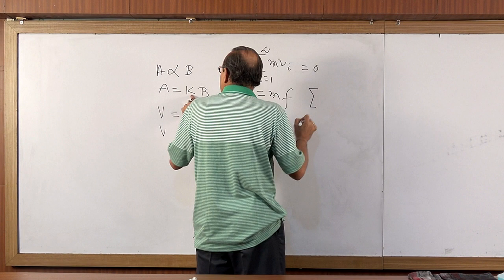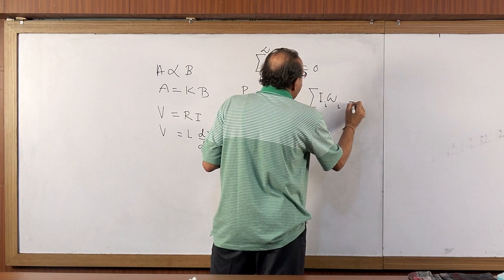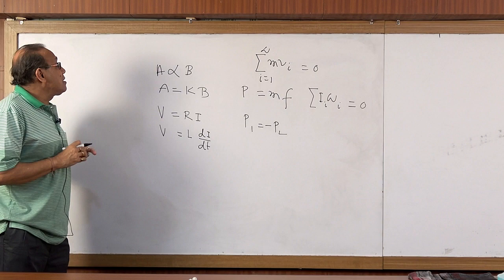Again, we want to put A equal to I omega_i, and K equal to 0. This is the laws of conservation of angular momentum.